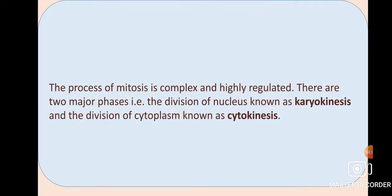The process of mitosis is complex and highly regulated. Binary fission is not complex, but mitosis is complex because it occurs in eukaryotic cells which have a definite nucleus. Since the nucleus is present, both the nucleus and the cytoplasm must divide. This leads mitosis to proceed in two phases: the division of the nucleus and the division of the cytoplasm. The division of the nucleus is called karyokinesis, and the division of the cytoplasm is called cytokinesis.